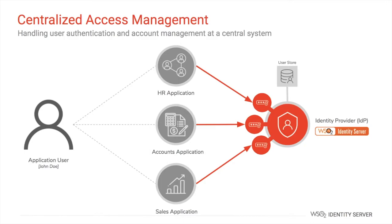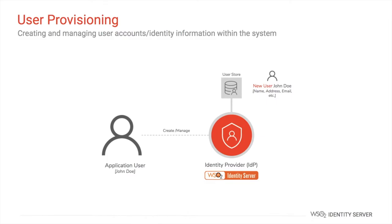Centralized access management and access control is an aspect of the IAM system where users are centrally managed in a component called the identity provider. All the applications trust this identity provider and users log in via the identity provider. This eliminates the need to maintain multiple passwords and resolves identity mismanagement issues in the application layer. With this, if you want to introduce a new application, there is no need to create user accounts in that application, and the application developer does not need to worry about user management — they can simply integrate with the central identity provider.